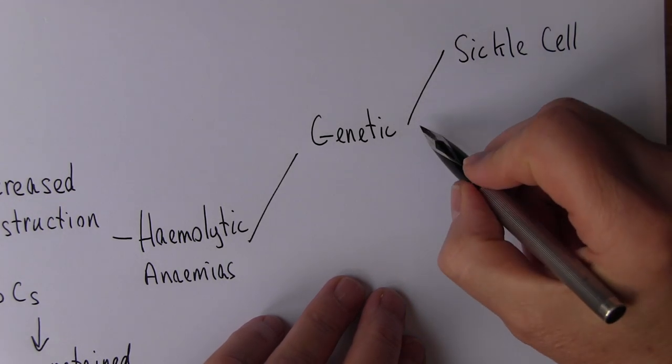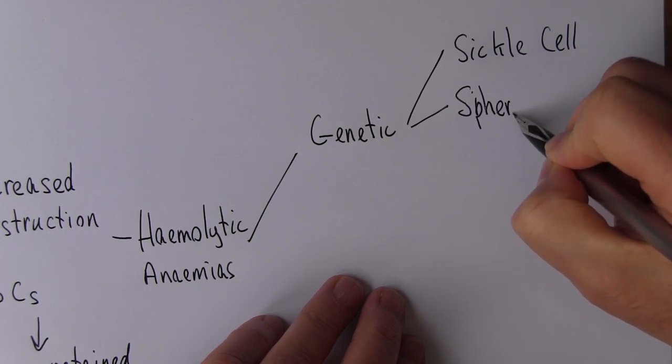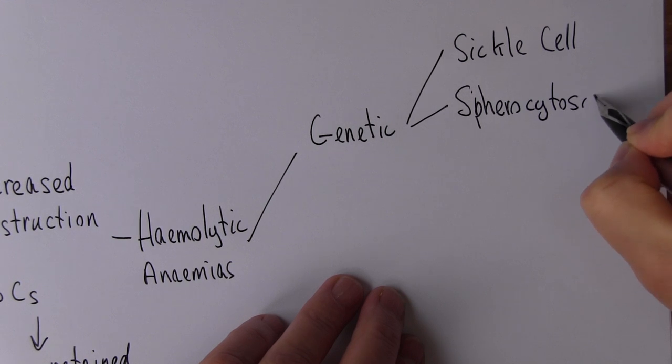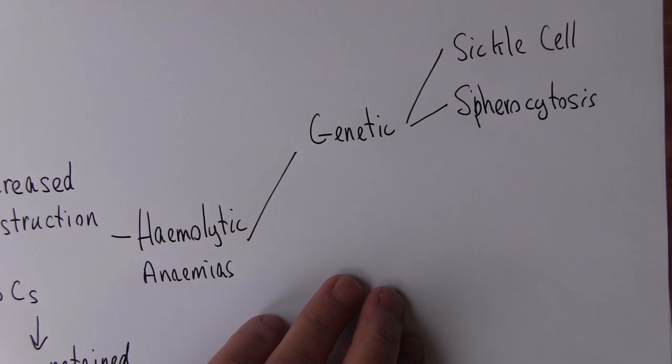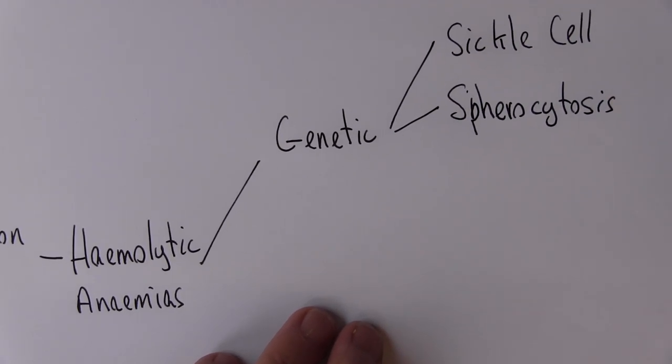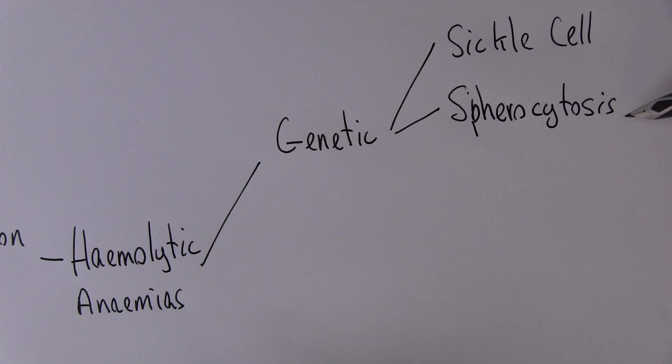But another genetic disorder that can affect the shape of the red blood cells is spherocytosis. You can probably see the sphero bit sounds a bit like sphere, so here we get spherical circular red blood cells. The key thing with these is that because the red cells are abnormal, they're recognized by the monocyte macrophage system, what used to be called the reticuloendothelial system. These cells, based particularly in the spleen, will break up these cells because they're abnormal.